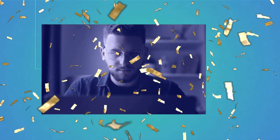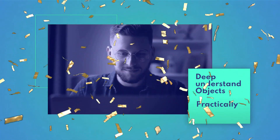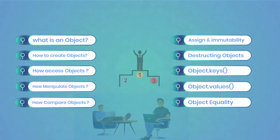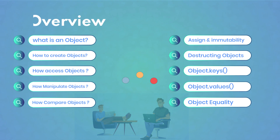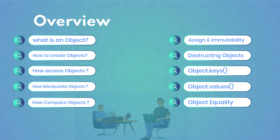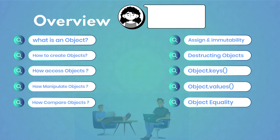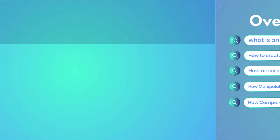In this course, you will learn more than what a JavaScript object is. You'll be able to deeply understand how objects work in JavaScript behind the scenes. We will cover how we can create objects with object literals and many other ways, how we can manipulate object properties, how we can use built-in objects in JavaScript, and by the end of this course, we will also have some practical exercises with solutions.